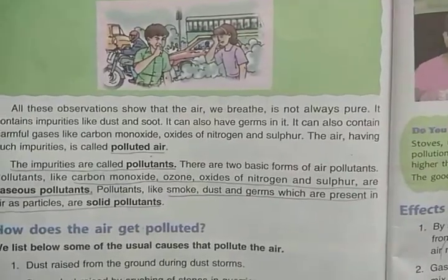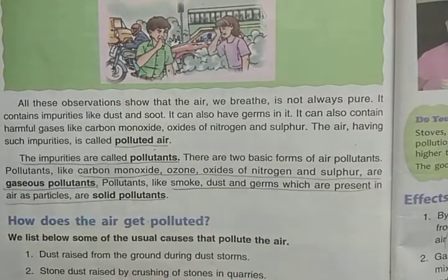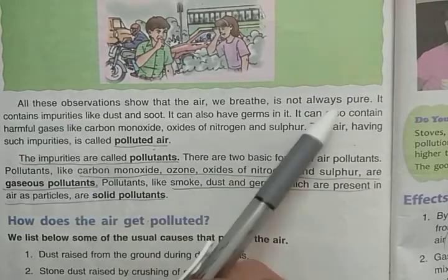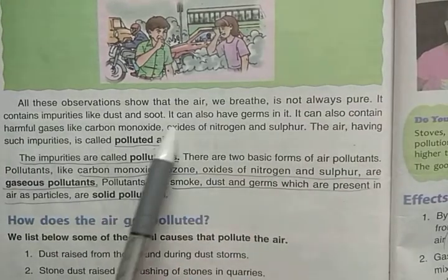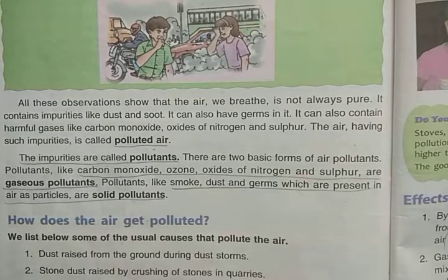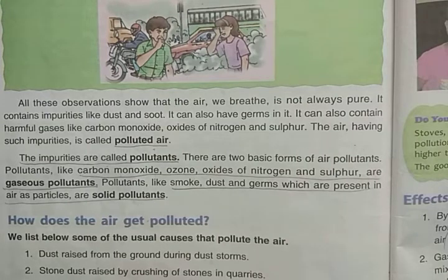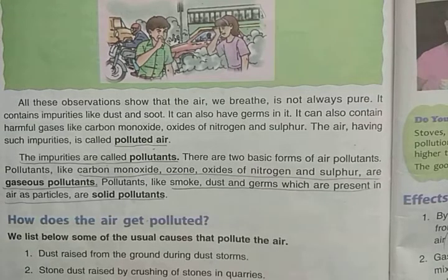These observations show that the air we breathe is not always pure. It contains impurities like dust and soot, and can also have germs and harmful gases like carbon monoxide, oxides of nitrogen and sulfur. Air that has such impurities is called polluted air.